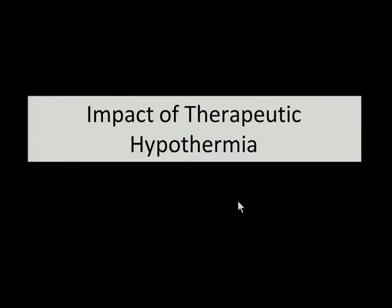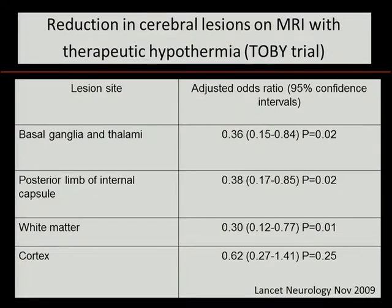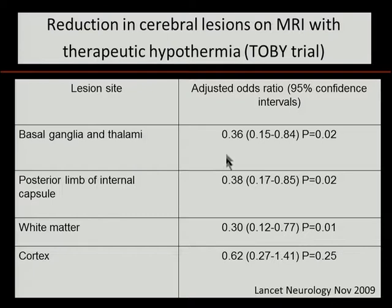As many of you are aware, we now offer therapeutic hypothermia to infants with term encephalopathy within the first six hours of life — sometimes the first hour. We cool the baby's body temperature down to 33.5 degrees Celsius, and they stay down for three days, achieved by body wraps or a mattress-type approach. The impact of this treatment on patterns of brain injury was initially concerning. But it has been nicely shown by the TOBY trial group from the United Kingdom that the MRI lesions in infants who received therapeutic hypothermia are reduced in number — about a 60% reduction overall in abnormalities in cooled infants, consistent with improved outcomes.